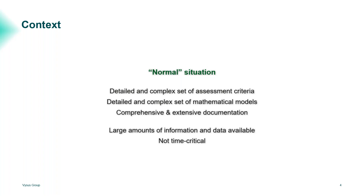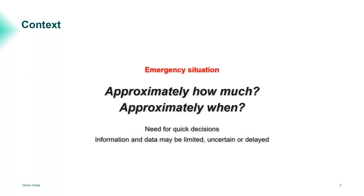If you happen to be in a nuclear emergency situation, all of this changes. We are talking about releases of radioactive material, and it often boils down to two questions: approximately how much will be released and approximately when. There will be a need for quick decisions, and information and data may be limited, uncertain, or delayed. All three of these were seen during both the Three Mile Island and the Fukushima accidents. So what can we do to change our way of working, and how much of what we have already done in normal situations can we reuse in an emergency?